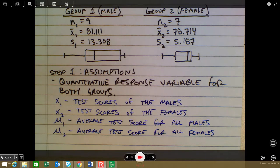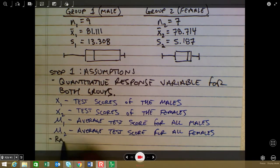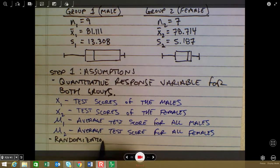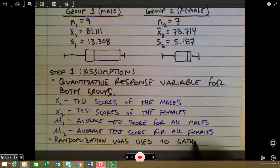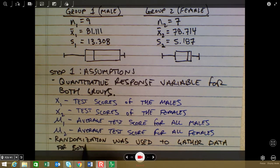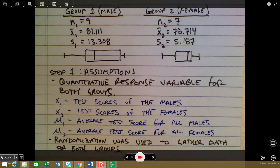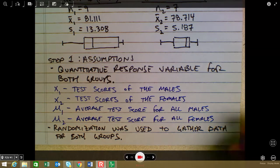The next assumption to verify is whether randomization was used to gather the data. This is a really important component. In our class, we typically just assume that's true, so randomization was used to gather data for both groups — the males and the females. Part of the reason we check for randomization is to avoid sampling bias. The third assumption has a couple of parts to it.